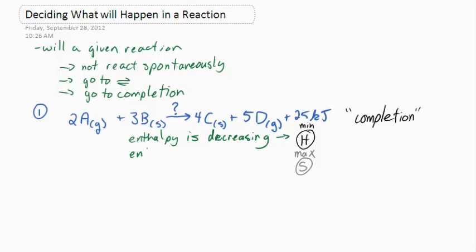In this system, enthalpy is decreasing in the forward direction and entropy is increasing. These are both supporting the reaction going all the way to completion, meaning all you'll see are products and no reactants left over at the end.